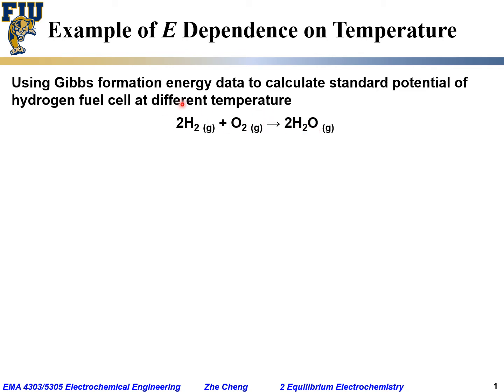With this overall fuel cell reaction, we want to use the Gibbs formation energy data to calculate standard cell potential at different temperatures. The reaction Gibbs free energy change ΔᵣG° under standard conditions would be the Gibbs formation energy for all products minus the Gibbs formation energy for all reactants.